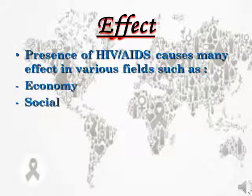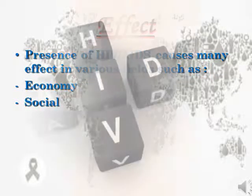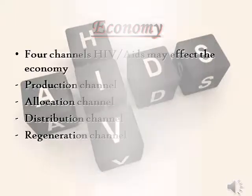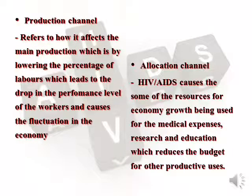The impacts of HIV and AIDS are identified in various fields such as economy and society. According to the United Nations Department of Economic and Social Affairs and Population Division, HIV affects the economy in various ways, categorized into four channels. The first is the production channel, which refers to how HIV lowers the percentage of labor, leading to a drop in worker performance and fluctuations in the economy. The second is the allocation channel, where resources for economic growth are diverted to medical expenses, research, and education, reducing budgets for other productive uses.